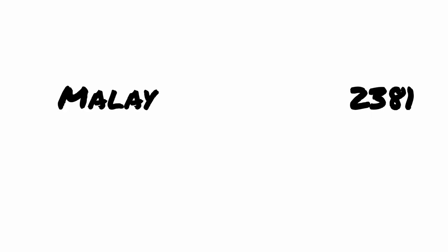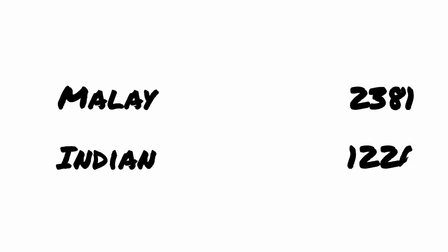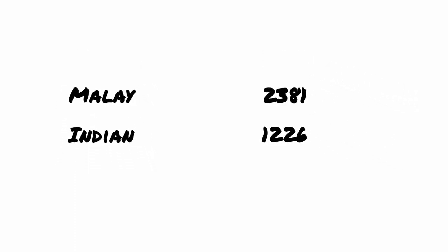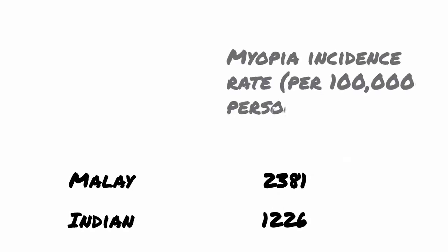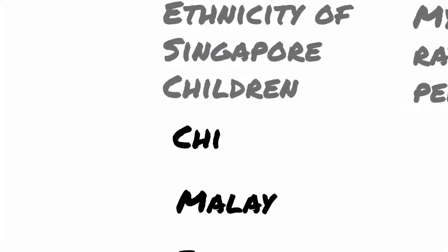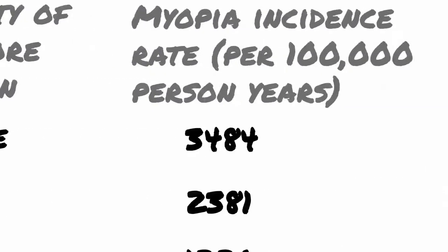In the same year, the rate in Malay children was found to be 2,381 and that in Indian children, 1,226 per 100,000 person-years. We can see that the incidence rate of myopia varies with ethnicity in Singapore children. Chinese children develop myopia approximately three times as fast as Indian children.